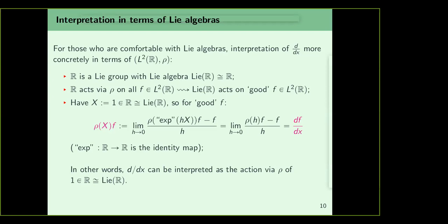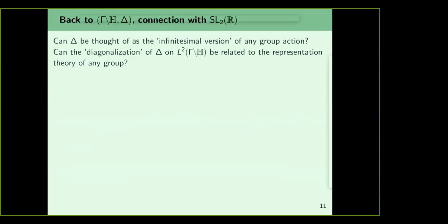Now we want to go back to the upper half plane and the hyperbolic Laplacian delta, which is minus y² times (∂²/∂x² + ∂²/∂y²). We want to diagonalize delta on L²(H mod Gamma). The question is: for classical Maass forms, can we relate this diagonalization to the representation theory of any group? That is one of the first passages from classical modular forms to automorphic representations.